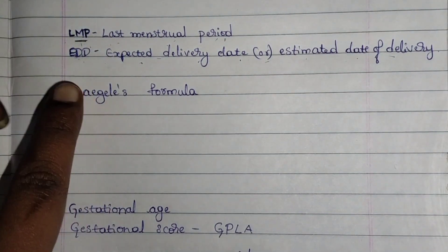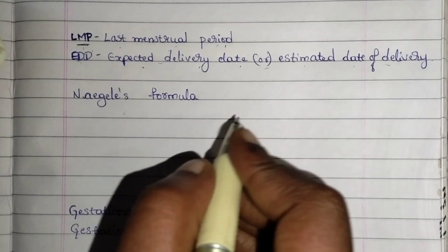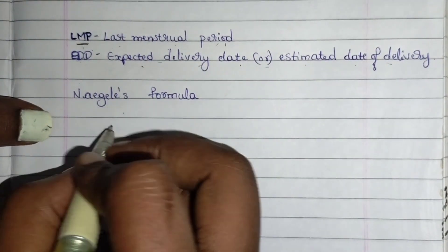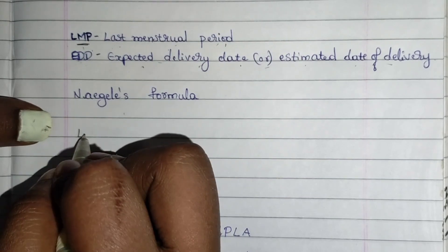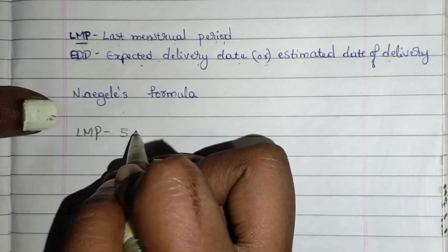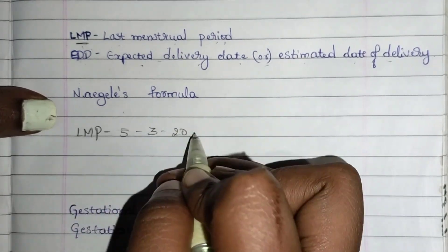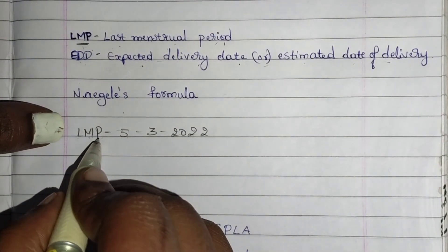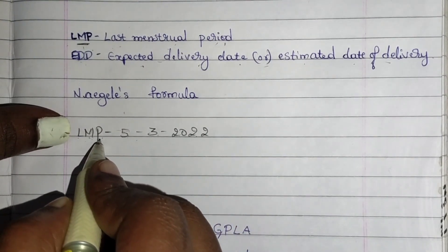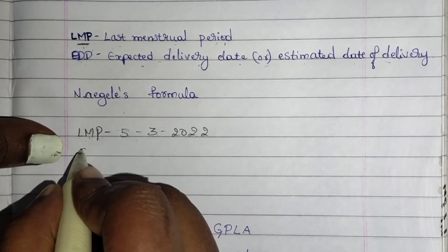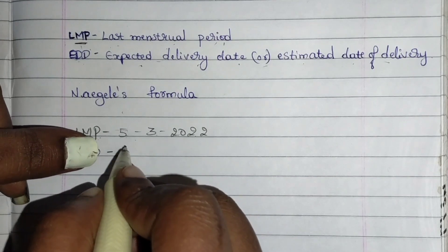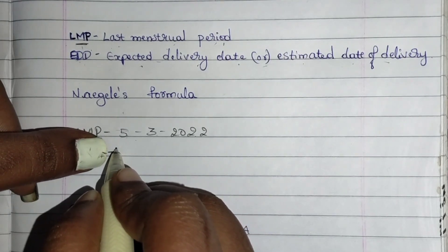To calculate EDD, we have to know the LMP. There are actually two ways to calculate EDD using Naegele's formula. Let's assume any date — like 5/3/2022 — as the LMP for a woman. Now, when will her EDD be? That is the expected delivery date, and it is calculated by a formula.